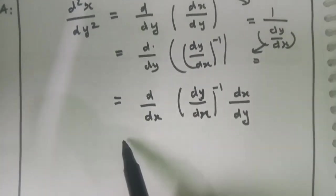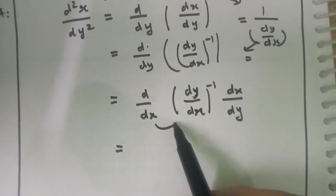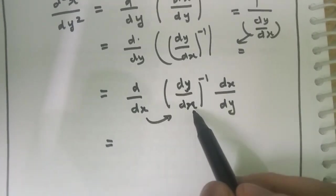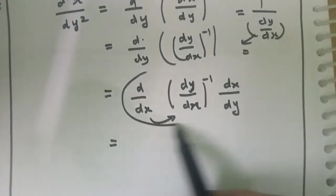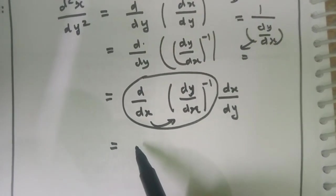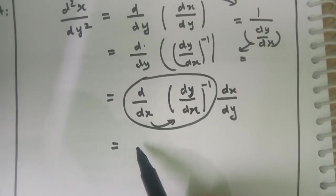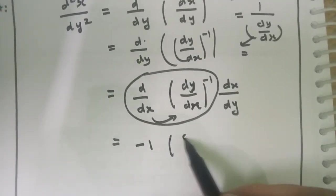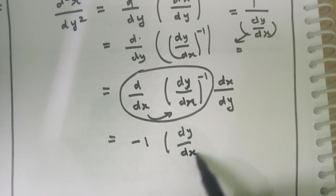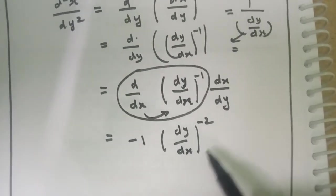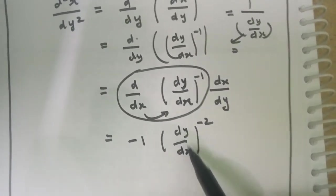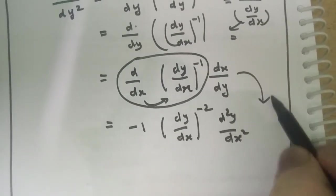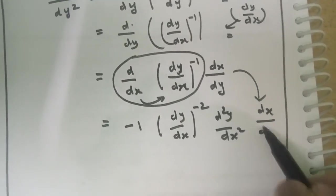We are getting the chain rule. After that, as usual differentiation, differentiation of (dy/dx)^(-1), using x^n formula. Differentiation of x^n is nx^(n-1). Like we write, -1(dy/dx)^(-2). Then differentiation of dy/dx gives d²y/dx².